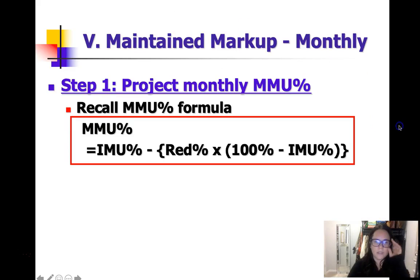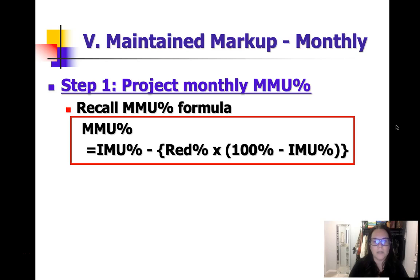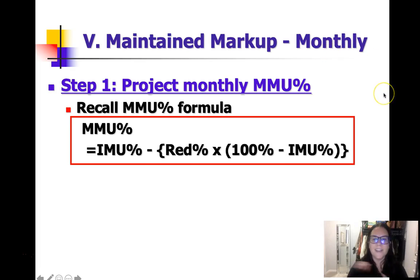Maintained markup monthly. Our maintained markup is what we're usually going to use. Initial markup is used if you don't have promotions or discounts, and cumulative markup you don't use as much, but maintained markup is the markup currently, wherever you are in the season. That's what we use in the real world in your future careers.